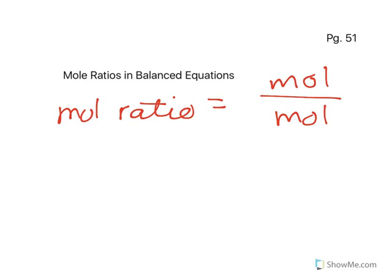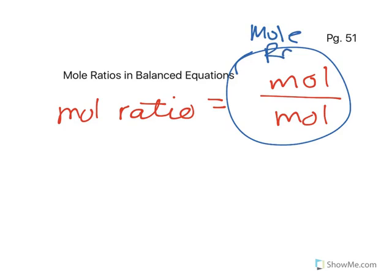So when we have moles over moles, what we're going to do is we're going to circle it, and we're going to label it mole ratio. Because this is the only time that moles isn't going to get a 1.